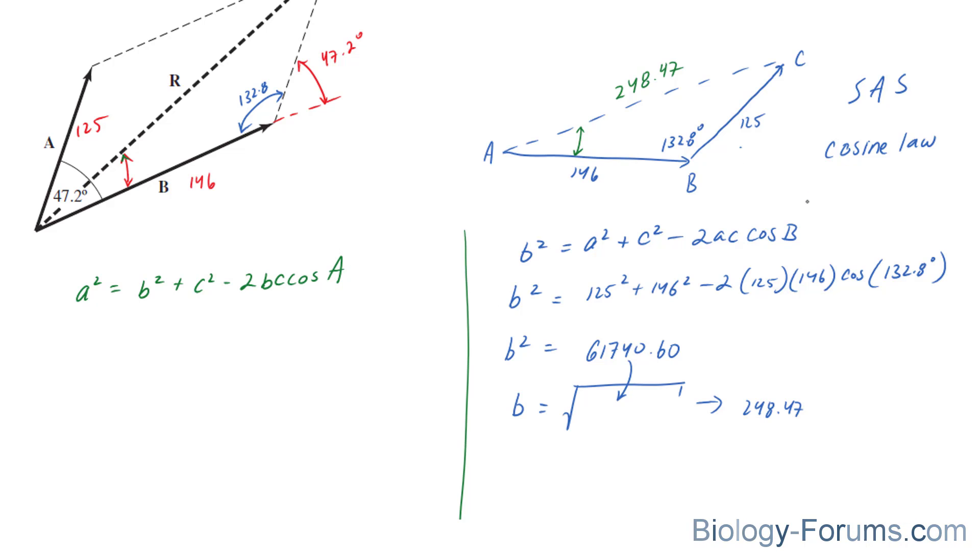And, we're looking for big A. And, we have everything that we need. We have little a at 125 squared. Little b, which we just found at 248.47. And, little c, at 146 squared minus 2 times 248.47 times 146 cosine A. Now, some students find these types of cosine law questions difficult because they have a hard time solving for A. What I recommend doing is taking this and this term over. And, of course, they're going to become negative.